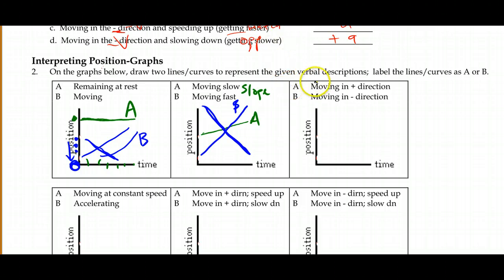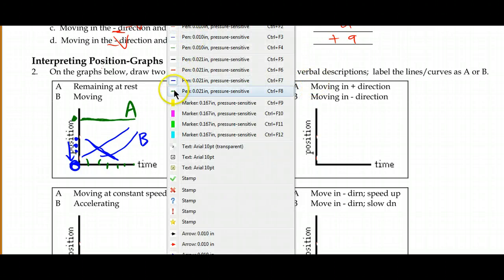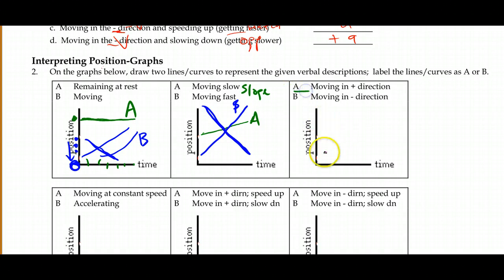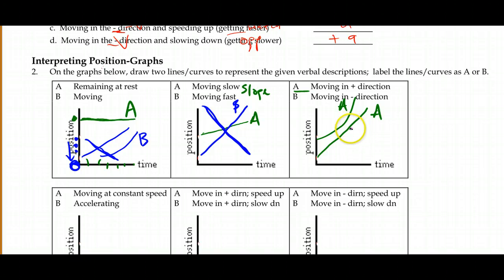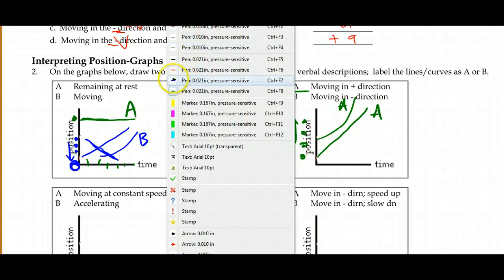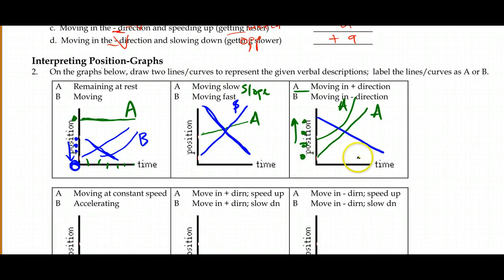Moving in a positive direction versus a negative direction: in the positive direction we need a positive slope — it could be a curving positive slope indicating speeding up, but it must be upward trending. For moving in a negative direction, we'll see some kind of downward trend — it could be a straight line, a curve, or a slowing-down curve heading toward zero.